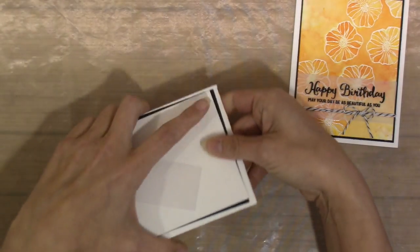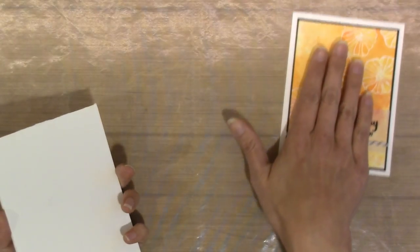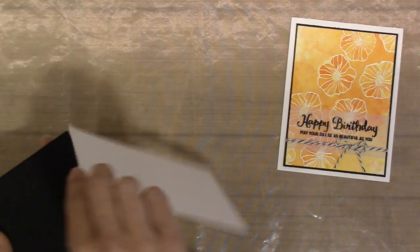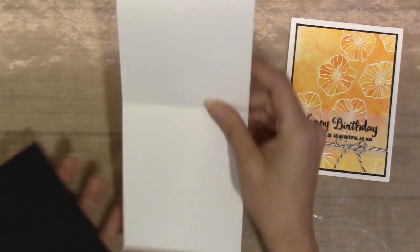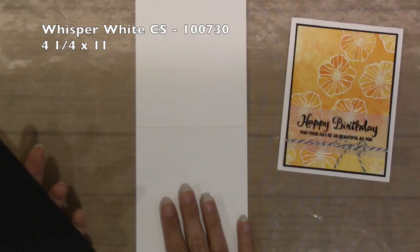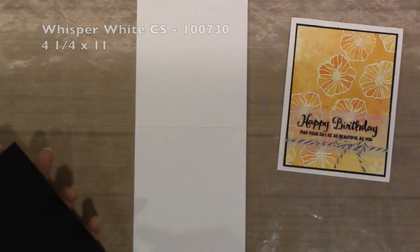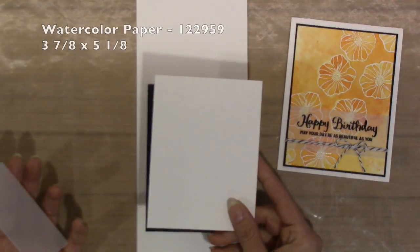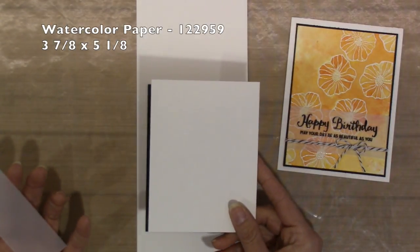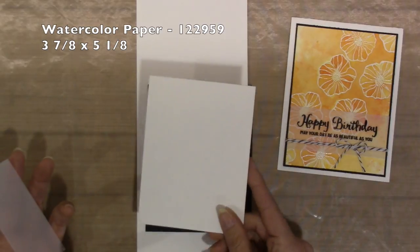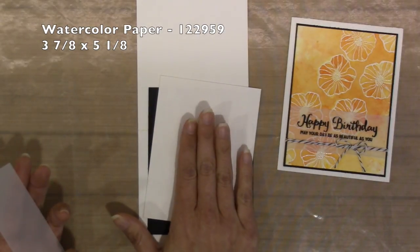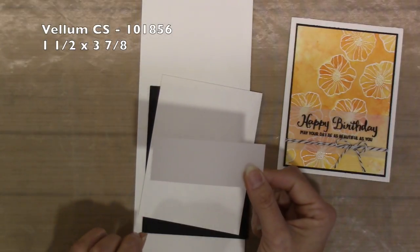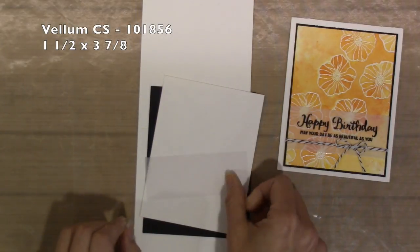For paper, I kept this card minimal because I wanted my focus to be on my technique and my front of my card versus putting many layers or anything on it. Whisper White cardstock 4.25 by 11 scored at 5.5. Basic Black is 4 by 5.25. I used watercolor paper for this technique. I know some use shimmer paper, but that is up to you. Watercolor paper is going to be 3-7-8 by 5-1-8. And lastly, I have a piece of vellum that is 1-1-2 by 3-7-8.